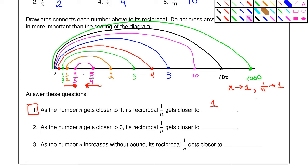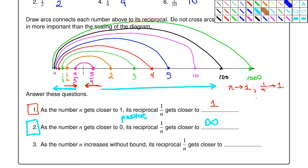The next one: as n gets closer to zero, moving closer to zero, the reciprocal 1/n gets closer to... this one just goes on forever. So as n gets closer to zero — and we'll assume this is from the positive side, because we're dealing with positive numbers — its reciprocal gets closer to infinity. In calculus, you would write: as n approaches zero from the positive side (using a little plus symbol), then 1/n goes to infinity.